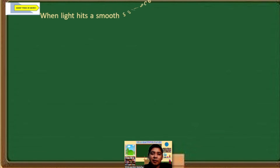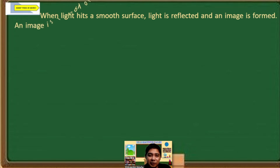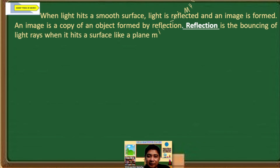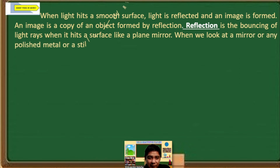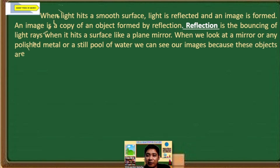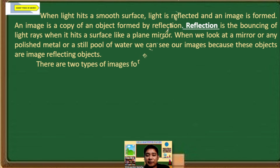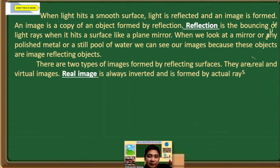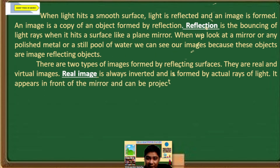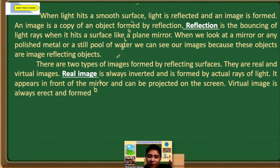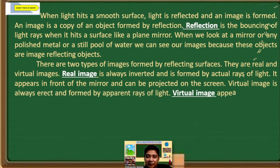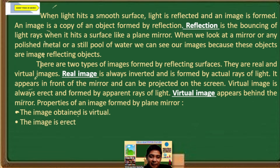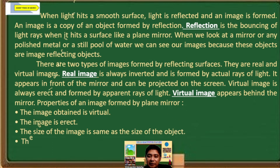Keep this in mind: when light hits a smooth surface, light is reflected and an image is formed. An image is a copy of an object formed by reflection. Reflection is the bouncing of light rays when it hits a surface like a plane mirror. When we look at a mirror, any polished metal, steel, or pool of water, we can see our images because these are image-reflecting objects. There are two types of images formed by reflecting surfaces: real and virtual images.